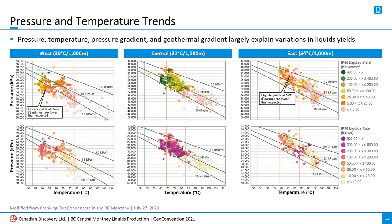Now we're going to look at the pressure and temperature data graphically. The graphs on the top row show liquids yields, while the graphs on the bottom show liquids rates. Note that the y-axis is reversed so that higher pressures are on the lower side of the graph. The geothermal gradient ranges from 30 degrees Celsius per 1,000 meters of depth in the west to 34 degrees in the east. In the west, we have a few wells with high liquids yields at temperatures below 63 degrees Celsius at Septimus, and the yield drops to 5 to 25 barrels per million cubic feet at higher temperatures. As the pressure gradient increases above 13 kPa per meter at Ground Birch, liquids yields drop to less than 5 barrels per million cubic feet. So while temperatures are favorable in the west area, it appears that the higher pressures are resulting in lower liquids yields.